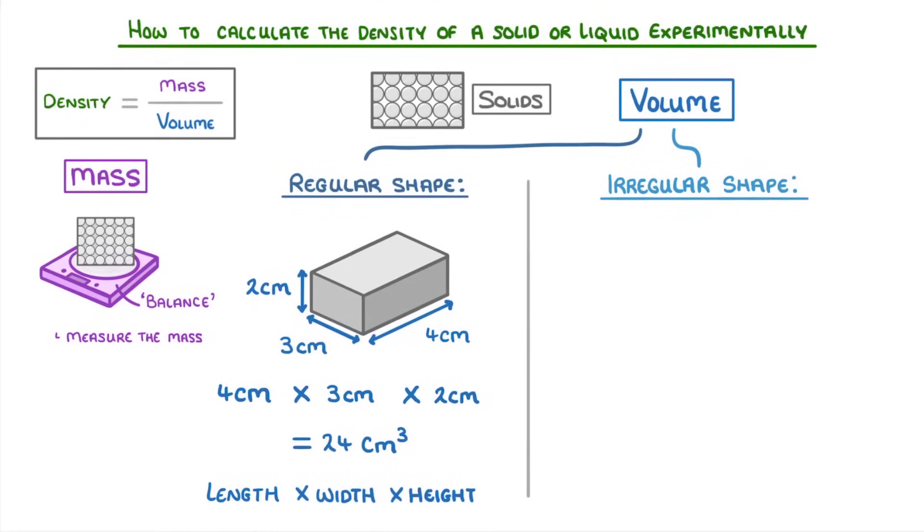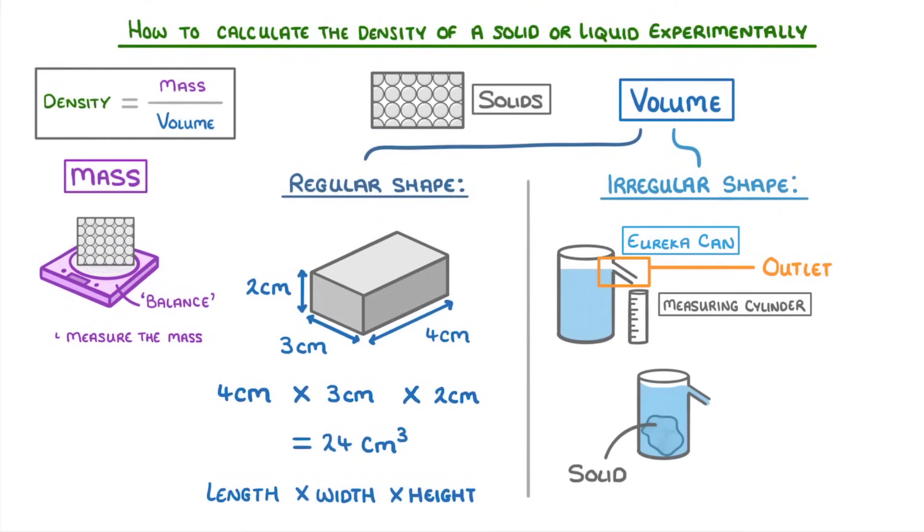However, if the solid is irregular, then we have to find its volume using a eureka can that's been filled with water, and an empty measuring cylinder. The cool thing about eureka cans is that they have these outlets on the side, which allows water to flow out and be collected by the measuring cylinder. This means that as long as it's filled right up to the outlet, when we add our solid substance to the eureka can, a volume of water exactly equal to that of the solid would flow out of the can and into the measuring cylinder, allowing us to measure the exact volume of the solid.